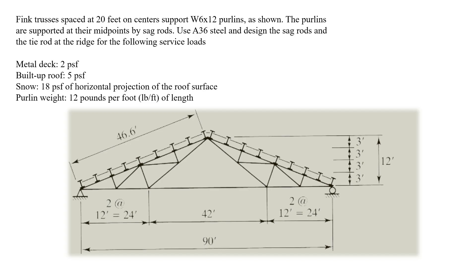Metal deck that weighs 2 pounds per square foot, built-up roof that weighs 5 pounds per square foot, snow load of 18 pounds per square foot of horizontal projection of the roof surface, and the weight of the purlin at 12 pounds per foot length.